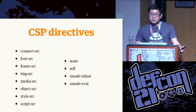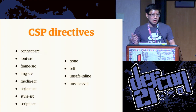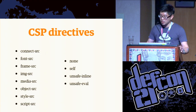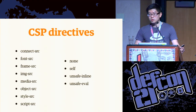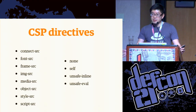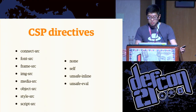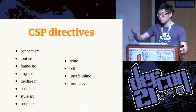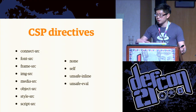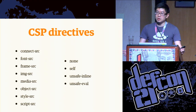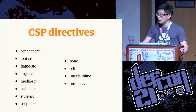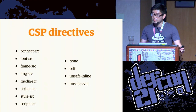Content security policy is broken up into a series of directives. The most common ones you'll probably end up using are directives such as script-src, which controls the use of JavaScript on a page; style-src, which controls the use of CSS and other styling on a page. And as you can see, there's a directive for pretty much most types of things you can embed on a web page. In addition, there are also special keywords you can use in combination with the directives to modify your content security policy.